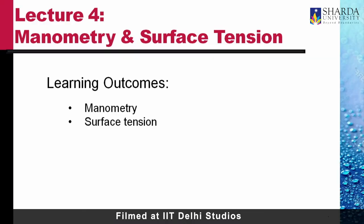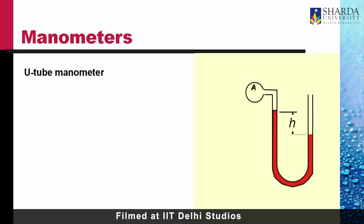Manometry is connected with measuring pressures. One of the simplest manometers is a U-tube. In this case, as shown in the picture, we have a bulb A which contains a gas and a liquid column shown in red in a tube. The difference in level in the two limbs is H. The pressure at A can be measured by using the principle that fluids have the same pressure at the same horizontal level if the fluids are connected. So, point 1 and point 2 will have the same pressure.